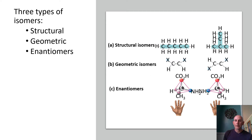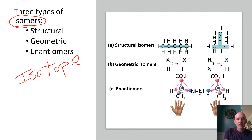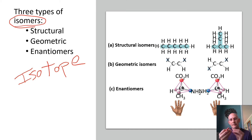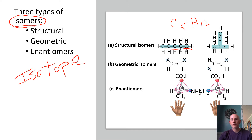When carbon forms different compounds, you get different types of isomers. An isotope is the same element with different numbers of neutrons. An isomer is the same chemical formula but put together in a different way. For example, two molecules both with five carbons and 12 hydrogens — both C5H12 — are the same chemical formula arranged differently. Those are called structural isomers.